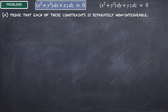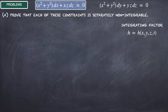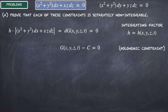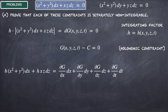First, let's prove that this equation of constraint is non-integrable. The procedure is the following: we will try to obtain a non-vanishing integrating factor H, which is a function of x, y, z, and t. We will multiply the constraint by this factor and suppose that this results in an exact differential of a function G, which is integrable, giving us the holonomic constraint G minus C equals zero. So if we can find such an integrating factor, then the original constraint is integrable. The left-hand side of this equation is H times x squared plus y squared dx plus H times xz dz.